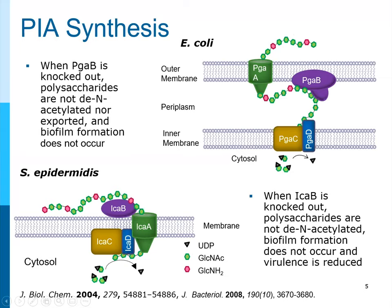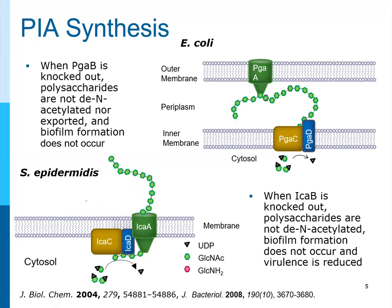In gram positive systems it's pretty similar, though there's more debate about how the transferase works, and one protein may perform succinylation of the polymer — though that hasn't been definitively proven. Because there's only a single membrane, deacetylation actually occurs at the surface. We became interested in the deacetylases because genetically knocking them out in either gram negative or gram positive systems changed the way bacteria made biofilms — they were no longer able to make good biofilms and were much less virulent in most animal models.